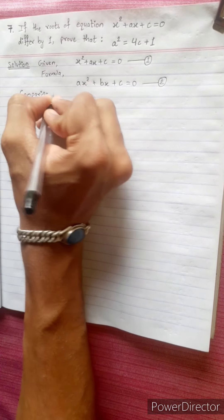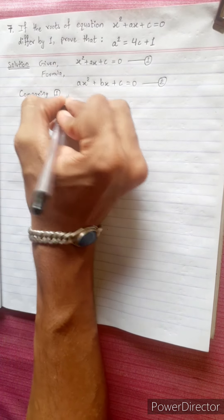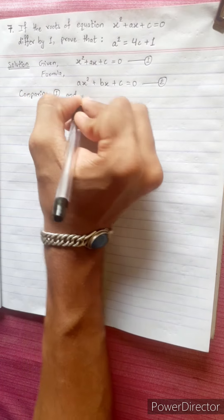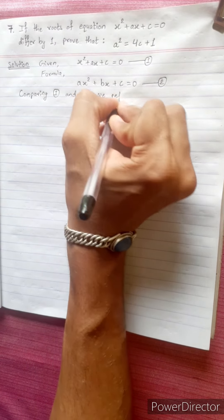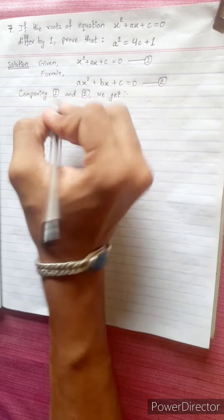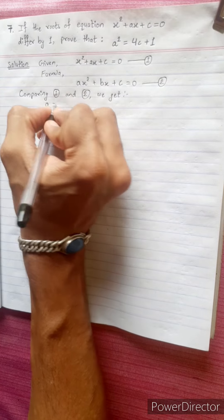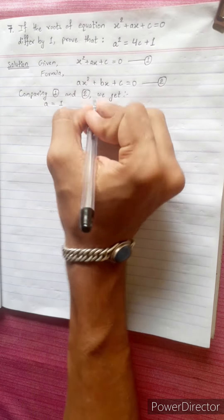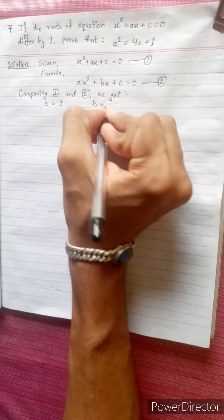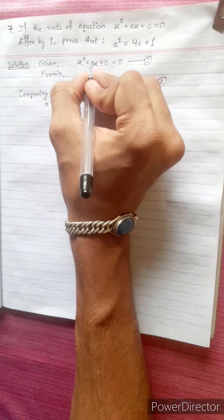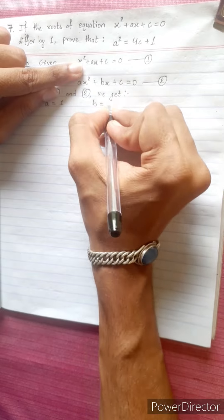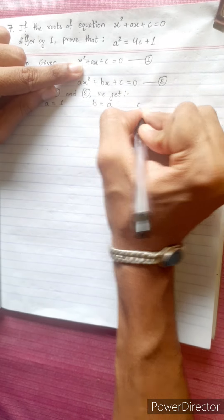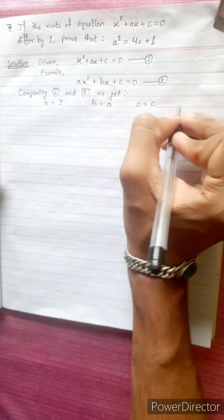Comparing equations 1 and 2, we get: the value of A is 1, the value of B is A, and the value of C is C.